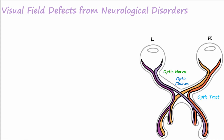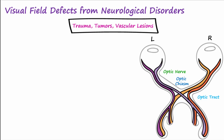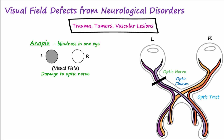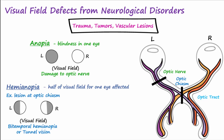Visual field defects may be noted when damage to the visual pathways or to the visual cortex occurs. Examples include trauma, tumors, and vascular lesions. Anopia is blindness in one eye and could occur if there is a disorder that blocks visual information in one of the optic nerves. If half of the visual field for one eye is affected, it's called hemianopia. A lesion at the optic chiasm would result in bitemporal hemianopia, more commonly known as tunnel vision.